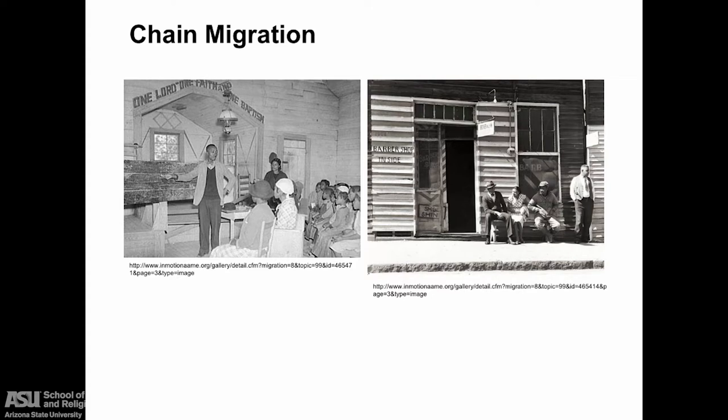Pioneers sent letters back home, where they were read in churches, barber shops, and at the kitchen table. They came home with stories of success, higher wages, and a better racial climate, and family and friends followed these pioneers. A definitive pattern of migration was established: Alabamans to Detroit, Carolinians and Georgians to New York City, Mississippians to Chicago. This is a clear example of chain migration.